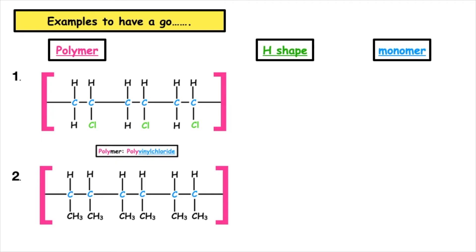Here are two examples for you to have a go at. The polymer chain is given — see if you can get the monomer into the H shape, draw the full structural formula for that monomer, and see if you can name it, also when given the polymer name. When you're ready, the answers will pop up on screen.